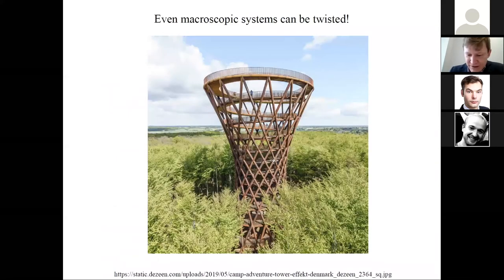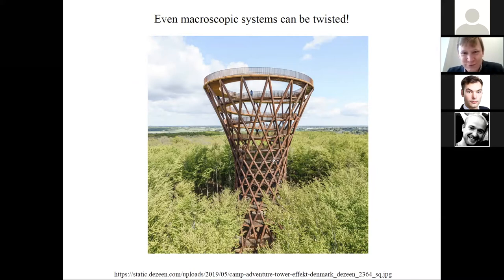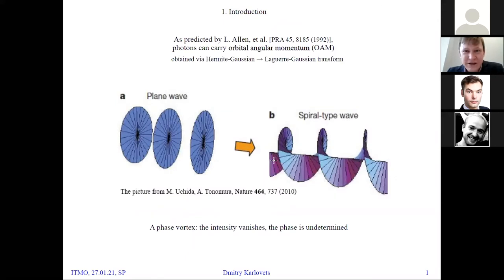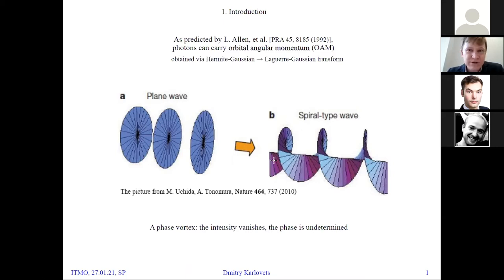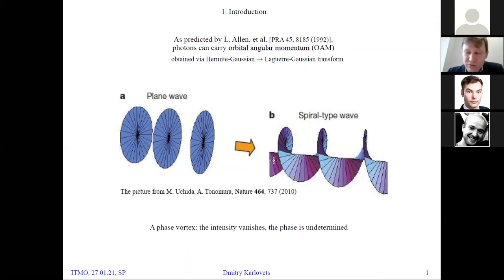The first thing to note is that this is probably one of the best models of what a vortex particle is — it looks pretty much the same but in the quantum domain. We know from the 1990s that light can carry orbital angular momentum with respect to a propagation axis, obtained by conversion of Hermite-Gaussian modes to Laguerre-Gaussian modes. Laguerre-Gaussian modes are eigenfunctions of the L_z operator — the operator of orbital angular momentum. It was only after that foundational work that it was finally realized by everybody.